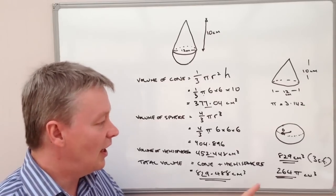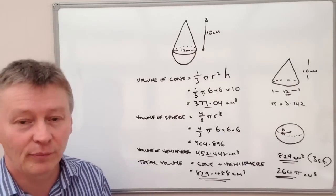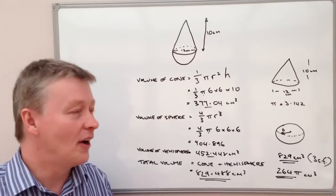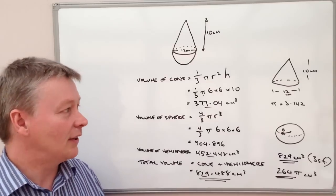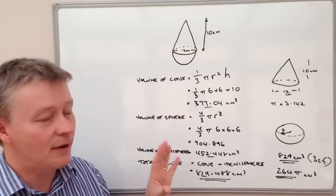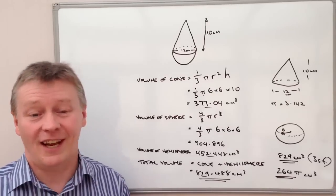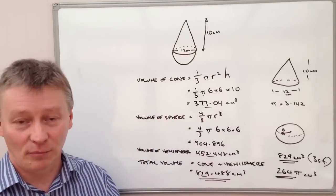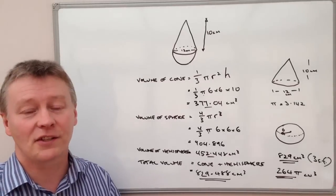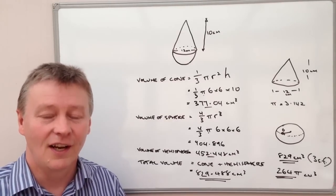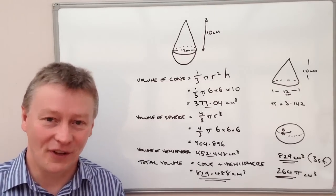Those are the two main variations you might get in questions like this: calculating to a given number of significant figures or decimal places, or leaving your answer in terms of pi. Please post, pin, or tweet the video, add a comment below, and have a look at the MathsRap website for a downloadable worksheet to practice these problems. You can also subscribe to the YouTube channel and check the playlist on volumes and densities.